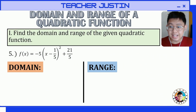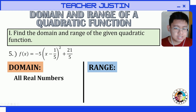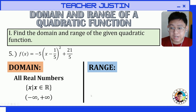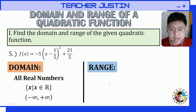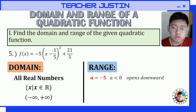Let's find the domain and range of this quadratic function written in vertex form. For the domain, for all quadratic functions the domain is all real numbers: x such that x is an element of all real numbers, or in interval form from negative infinity to positive infinity. For the range, we first identify the orientation of the graph by getting the value of a, which is negative 5. Since a is less than 0, the parabola opens downward and the vertex is at the highest point.